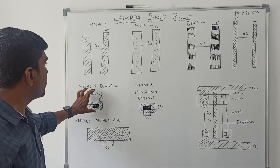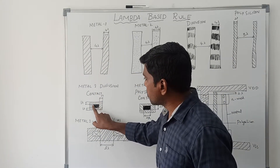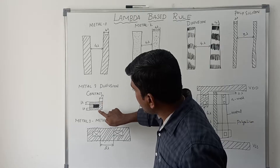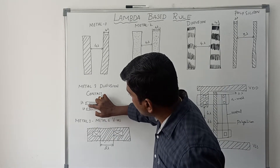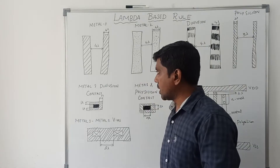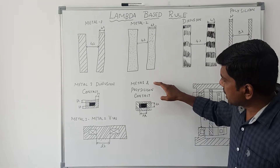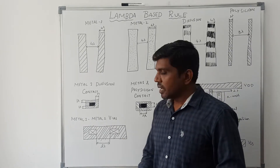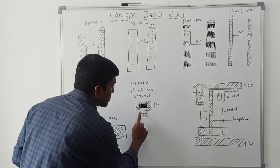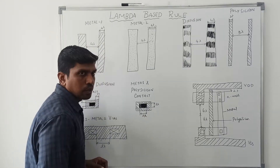For metal 1 with diffusion contact, the contact is represented as a fully shaded portion surrounded by the diffusion layer. The spacing between the diffusion and the contact is 1 lambda above and below. For metal 1 with polysilicon contact, the contact is placed inside the polysilicon layer. The length and width of the contact are each 2 lambda.